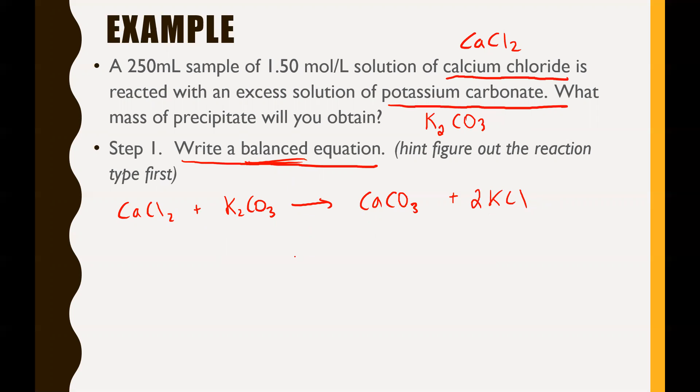Now one other thing I want to do. Usually we haven't worried about states of matter, but notice the question asks what mass of precipitate will you obtain. Remember that a precipitate is something that forms a solid after two solutions are mixed. We're looking for whatever the solid is. The question told us calcium chloride and potassium carbonate were both solutions, so those are both aqueous. But we need to look at the products and figure out which one is actually going to be a solid using your solubility chart.